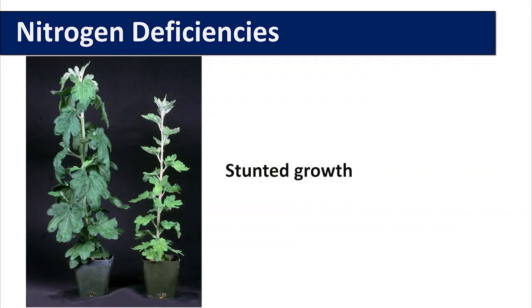Over time, stunting of the whole plant can occur because there is insufficient nitrogen present, even in the oldest leaves, to promote growth.